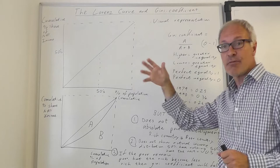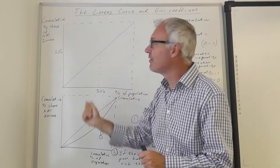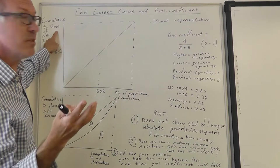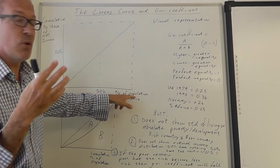Two important measures of inequality are the Lorenz curve and the related Gini coefficient. Let's start off with the Lorenz curve. To draw a Lorenz curve, we start with one of these diagrams. We've got the cumulative percentage share of national income and the cumulative percentage share of population.